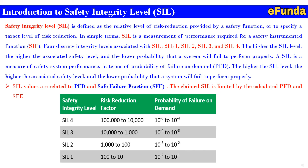One can see the table where four SIL levels are defined. Risk Reduction Factor and the Probability of Failure on Demand are also defined. The levels are SIL 1, SIL 2, SIL 3, and SIL 4, with risk reduction factors mentioned for each. The probability of failure on demand starts in the range of 10 raised to minus 1 and increases accordingly in order.